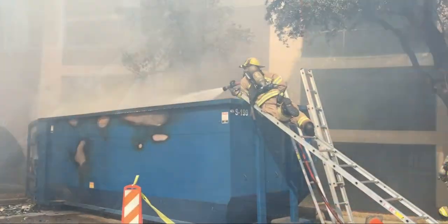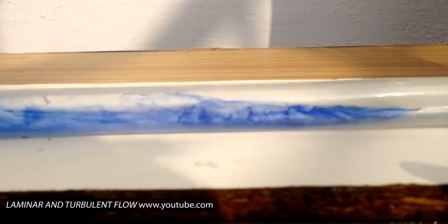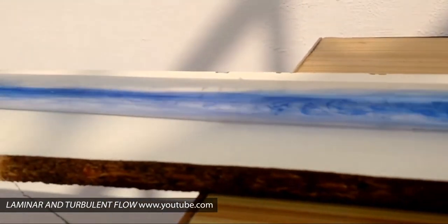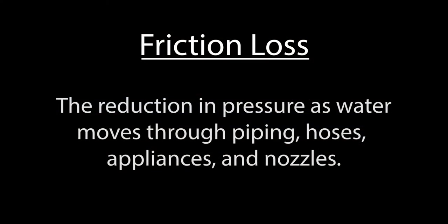As water moves through the pump piping, hoses, appliances, and the nozzle, turbulence is created at every point that water comes into contact with the surface, creating friction. This friction slows the movement of water down and is referred to as friction loss.